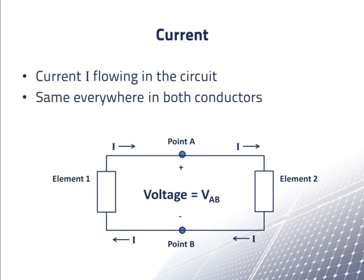Suppose now that there is a voltage V sub AB between points A and B, and the current I is flowing in the conductors as shown. The current must be the same at all points in the upper conductor, or else charge would accumulate in the conductor. The current out of component 1 must be equal to the current into component 1, or else charge would accumulate in component 1.